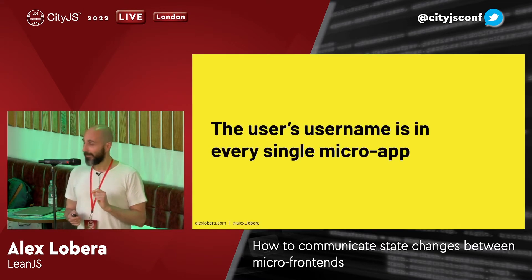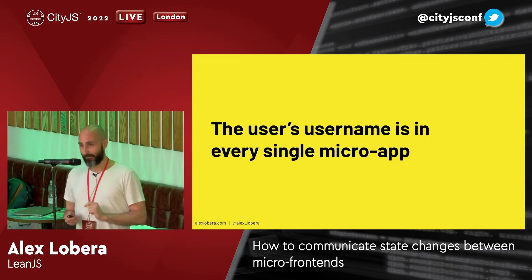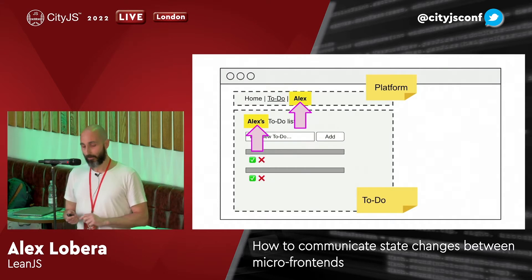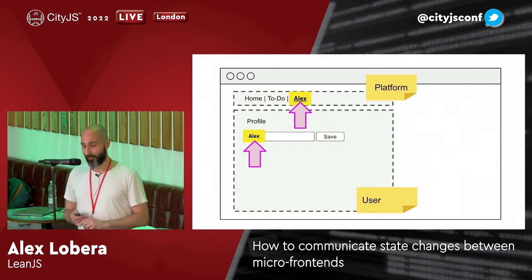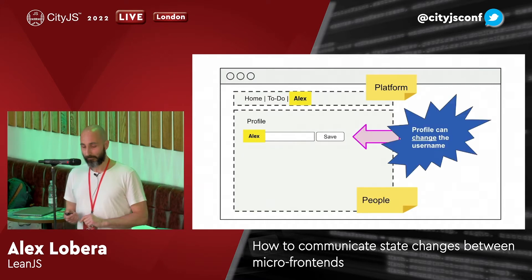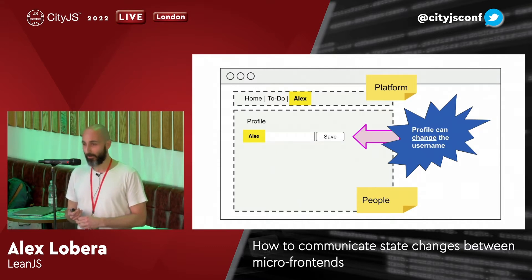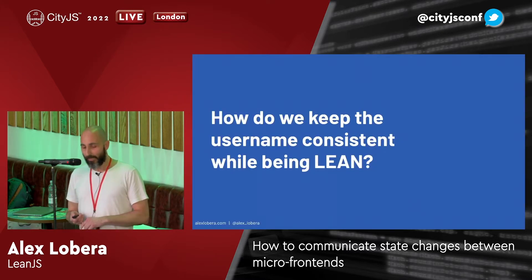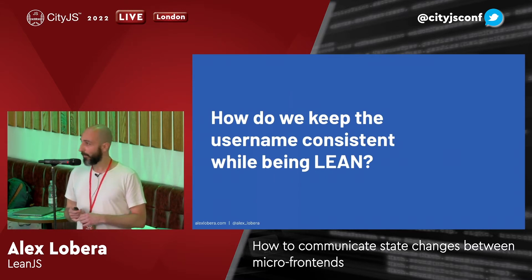You may notice that the user's username appears in every single domain — the activity feed, the navigation bar, and the profile. And to make it more interesting, the profile domain can change the username, so if we change the username it should change everywhere. But this makes us think, because we want our small apps to be LEAN and loosely coupled — so how are we going to solve this problem?